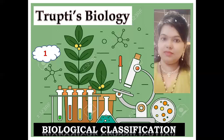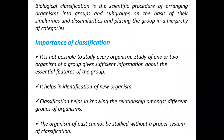Biological classification is the scientific procedure of arranging organisms into groups and subgroups on the basis of their similarities and dissimilarities, and placing the groups in a hierarchy of categories. We divide organisms on the basis of similarities and dissimilarities — this is what we call biological classification.